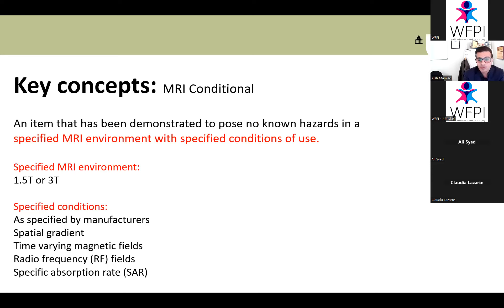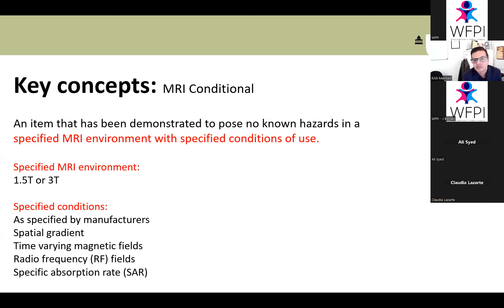MR Conditional is an item demonstrated to pose no known hazards in a specified MR environment with specified conditions of use. The specified environment might be 1.5, 3, 7 Tesla or less, and the conditions can be numerous — listed under the yellow triangle label. Being MR Conditional is a relative state; it doesn't apply to all environments and conditions. It is specific to each piece of equipment, including fire extinguishers, oxygen cylinders, syringe drivers, or monitoring devices.